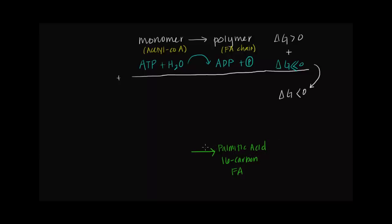Palmitic acid is the primary product of fatty acid synthesis in our body, and the body can use it as a base to synthesize longer chain fatty acids if needed. Our monomer is acetyl-CoA, a two-carbon molecule, so to make a 16-carbon fatty acid we need eight acetyl-CoA molecules. Since this is an anabolic reaction, seven ATP molecules are also required.